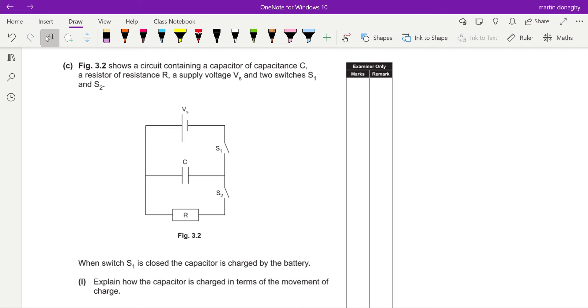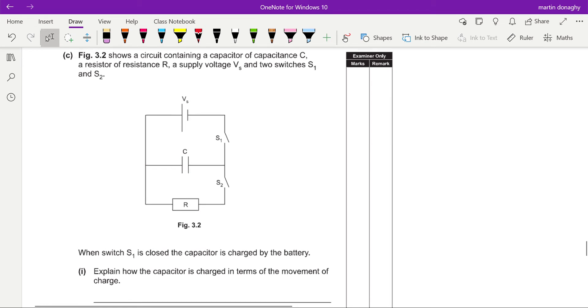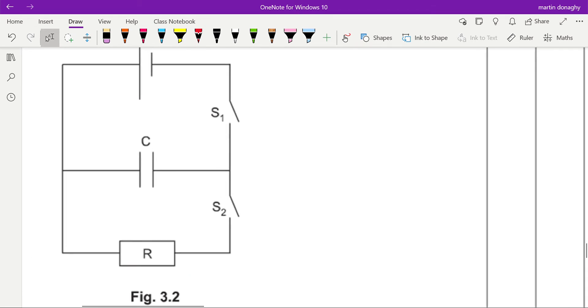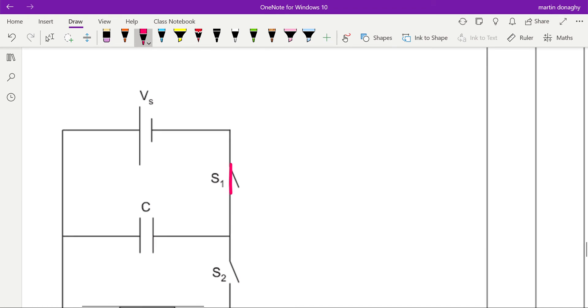When switch S1 is closed, the capacitor is charged by a battery. Explain how the capacitor is charged in terms of the movement of charge. So when this switch is closed, our capacitor charges up. How does it charge up? Well, conventional current goes this way, but it wants us to talk about the movement of charge, so we're talking about electrons and we always take them to move the opposite direction that the current flows.